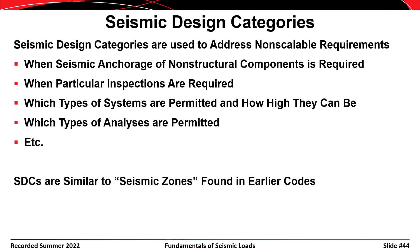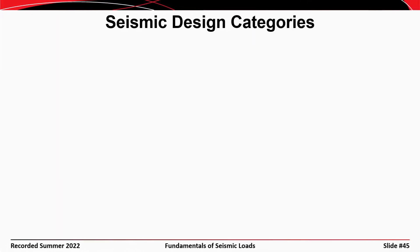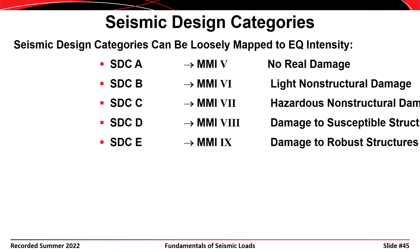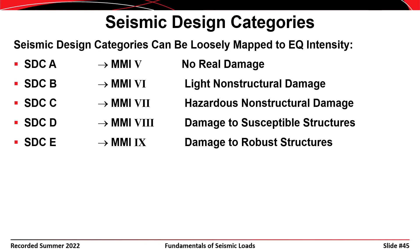Seismic design categories are similar in nature to the seismic zones found in earlier code versions, but SDCs also incorporate the risk category for the structure, whereas the old seismic zones did not. Seismic design categories can be loosely mapped to earthquake intensity. Per the commentary to ASCE 7: SDC A means essentially no expected damage; SDC B corresponds to roughly MMI 6 intensity with light structural damage; and SDC E corresponds to roughly MMI 9 intensity, where damage is expected even to robust structures.